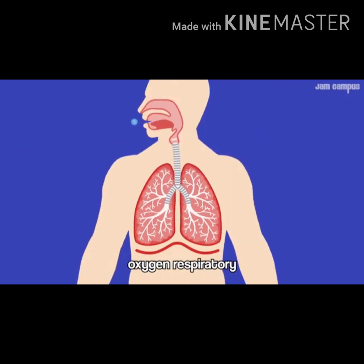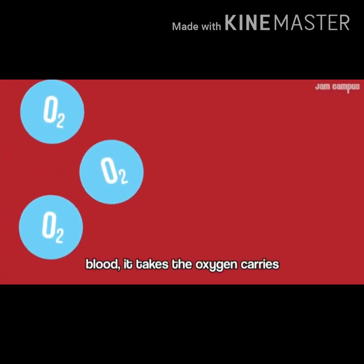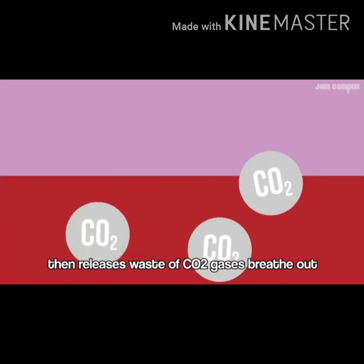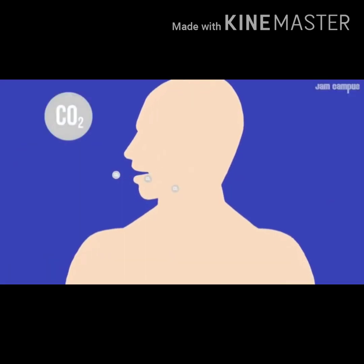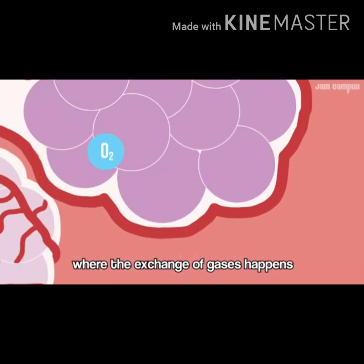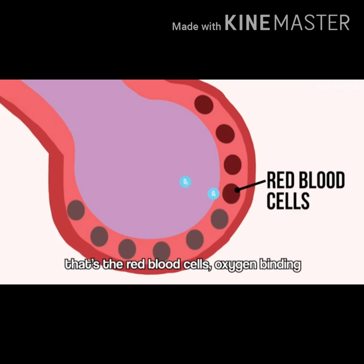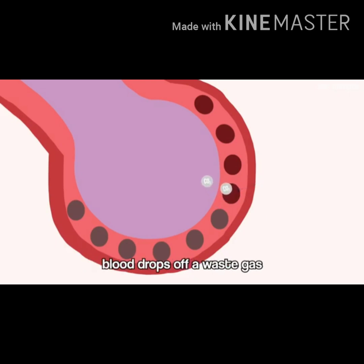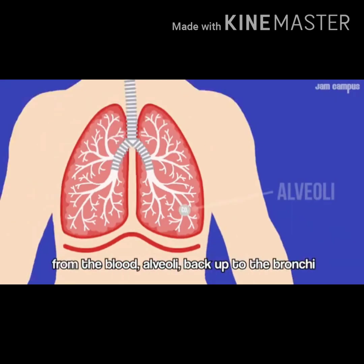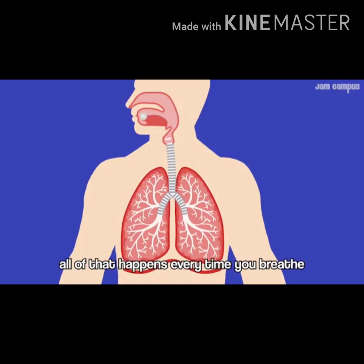The lungs are spongy organs whose purpose is exchanging gases through the blood. The circulatory system carries oxygen from the lungs through the body, then releases waste CO2 which is breathed out. Inside the alveoli, a molecule of oxygen diffuses into a capillary and enters the blood — from the plasma to the red blood cells, binding with the heme part of the hemoglobin protein to make oxyhemoglobin. Carbon dioxide, the waste gas, goes the other direction — from the blood through the alveoli, back up through the bronchi, trachea, larynx, and pharynx, exiting through the nasal or oral cavity.